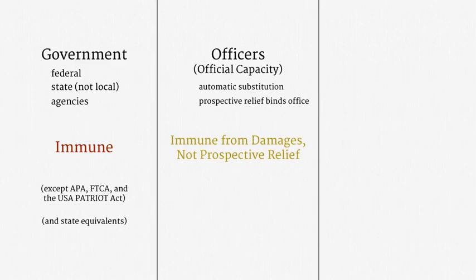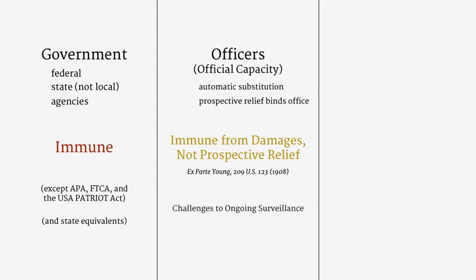Under the Constitution, a government officer sued in their official capacity is immune from damages. They are not, however, immune from prospective relief. A plaintiff can still seek an injunction and can still seek a declaration of rights. That distinction arises from Ex parte Young, a case from over a century ago which is still good law. So official capacity claims are a critical tool for challenging ongoing surveillance programs.